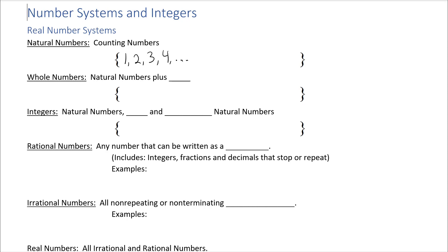The next group is called whole numbers. Whole numbers include all of the natural numbers and also zero — so zero, then all of the natural numbers from the group before. The next group after that is called the integers.